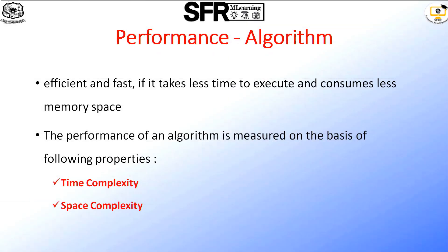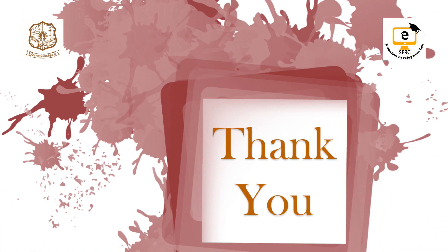To measure the performance of an algorithm, you need to follow two properties: time complexity and space complexity. Each algorithm should be efficient and fast. If it takes less time to execute and consumes less memory space, then that algorithm is said to be efficient and fast. This concludes the introduction to data structures and algorithms. I wish the learners happy learning. Thank you.